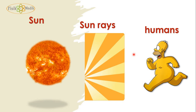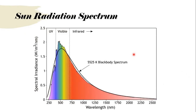Sun rays are very important because we need them for photosynthesis and for our skin, since we produce vitamin D with Sun rays. But Sun rays are very dangerous too — without protection they could give you cancer, so you have to be careful. As shown in the graph, Sun rays include visible light, which is useful for everyday life.